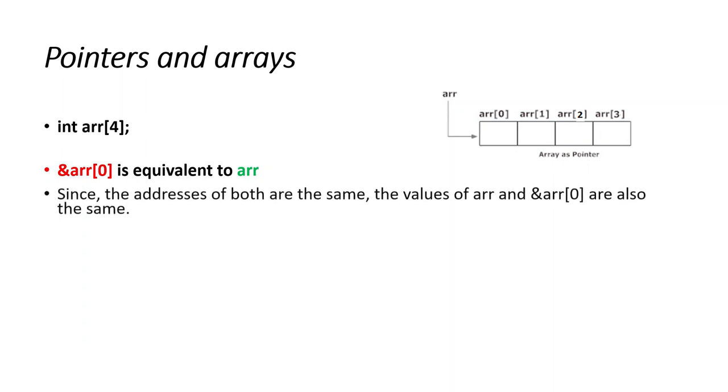Let's review pointers and arrays. You see the block diagram of arrays: int arr[4] means array of 4. &arr[0] is equivalent to arr since the addresses of both are the same. The values of arr and &arr[0] are also the same.